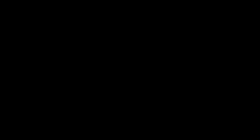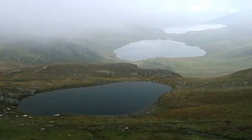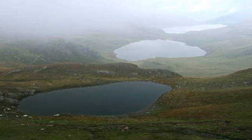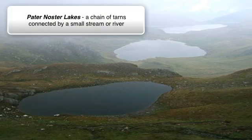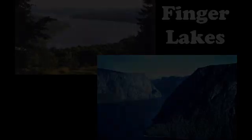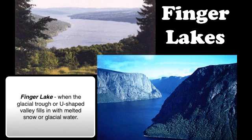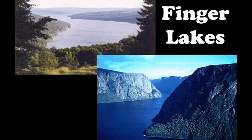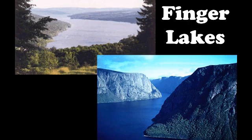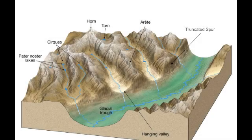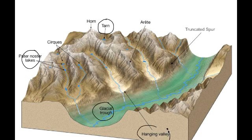Just a couple more to go. Here we have three tarns — a tarn here, another one here, another one here. Usually tarns are pretty isolated, but when you have a chain of tarns like this they're called paternoster lakes — a chain of tarns usually connected by a small stream. Finally, finger lakes: finger lakes form when the main glacial trough fills up with water from snowmelt and glacier melt, creating a massive lake that runs the entire length of the glacial valley.